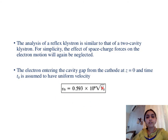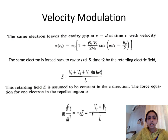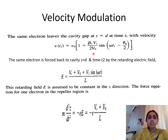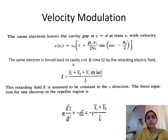For velocity modulation in a reflex klystron: the expression for the velocity-modulated electron leaving the cavity gap at z = d and time t1 is familiar from the two cavity klystron amplifier. The difference here is that the electron is forced back to the cavity by the repeller voltage. z = d and time t2, where t2 is the time taken by the electron to travel from the repeller space back to the cavity.